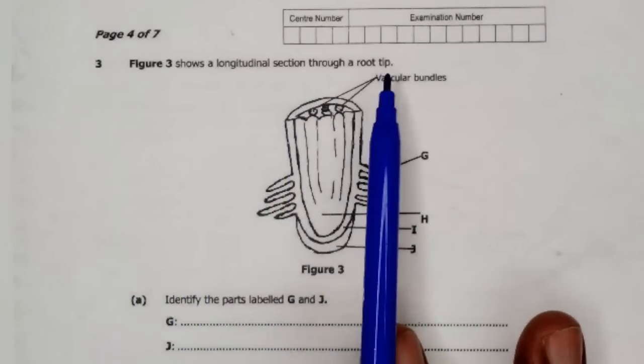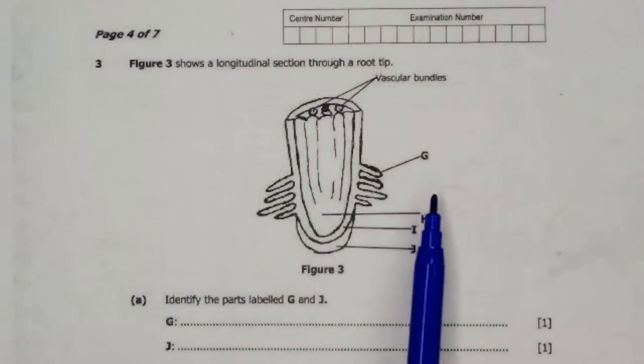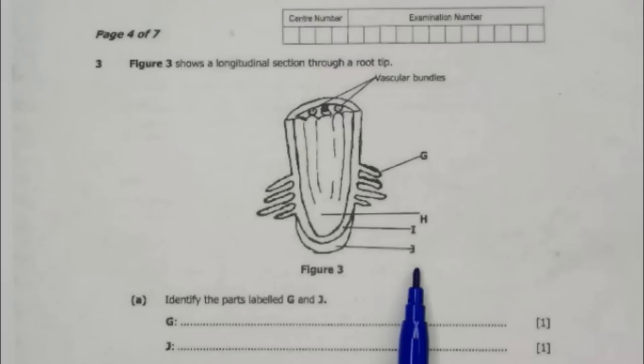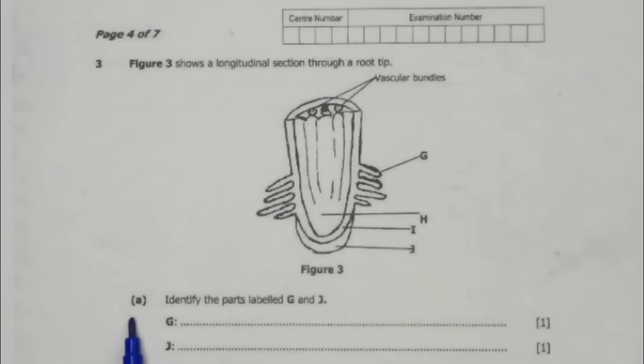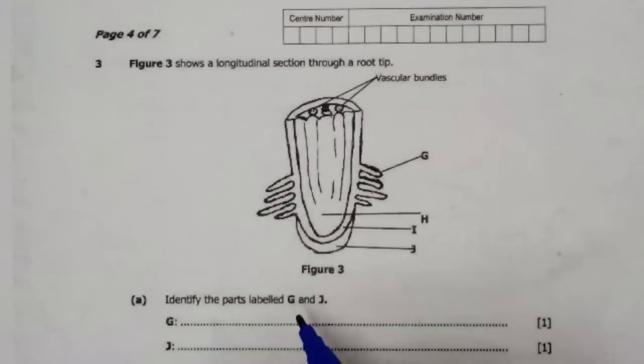Question three: Figure 3 shows a longitudinal section of a taproot. We have our diagram and we have labeled parts G, H, I, and J. 3A: Identify the parts labeled G and J. G is the root hair and J is the taproot.